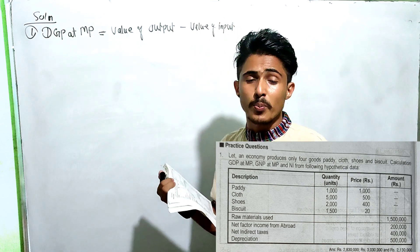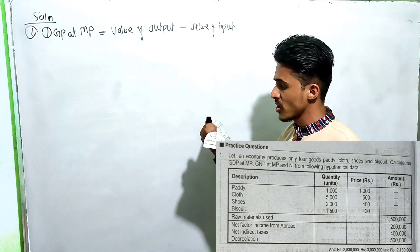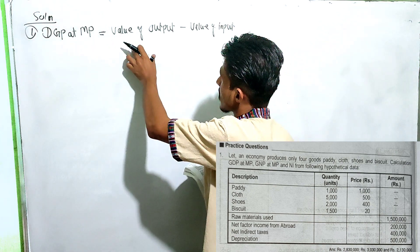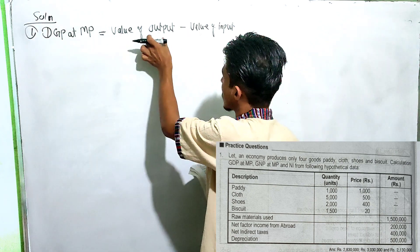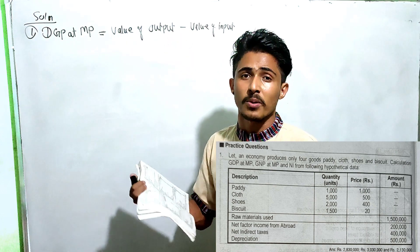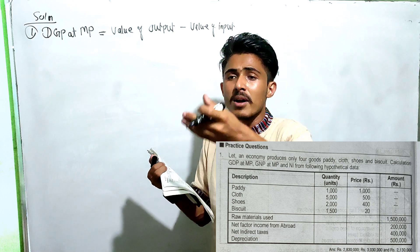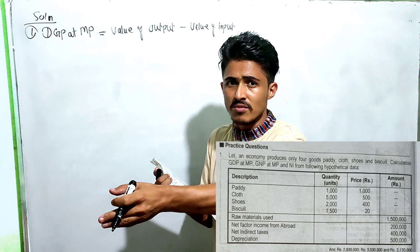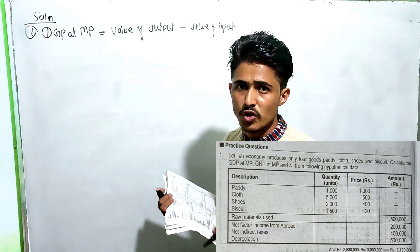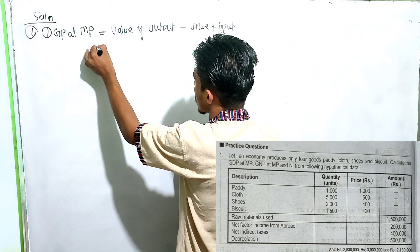We will take the value-added method. We have the product method, value-added method. GDP at MP using the value-added method. The value-added method formula: value of output minus value of input. If we use raw material, we will take the value-added method.